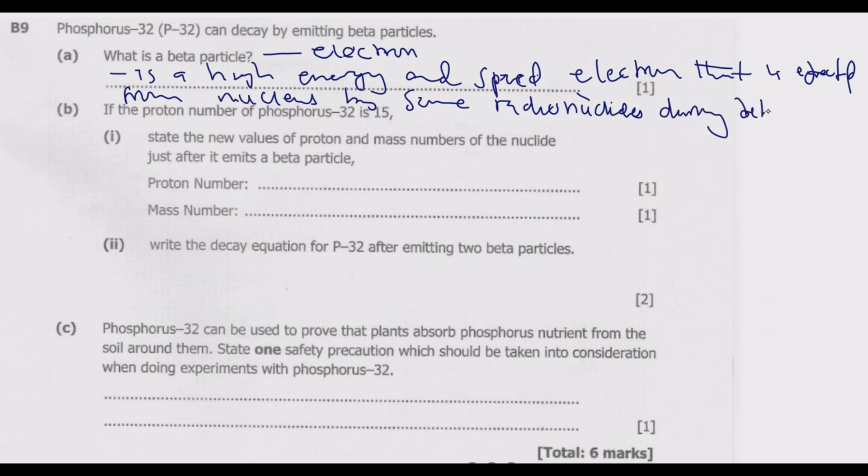Question B part (i): If the proton number of phosphorus-32 is 15, state the new values of proton and mass numbers of the nuclide just after it emits a beta particle. We have phosphorus-32, meaning the mass number is 32. The proton number is 15, so the number of protons is 15, electrons is also 15, then neutrons will be 32 minus 15, which is 17.